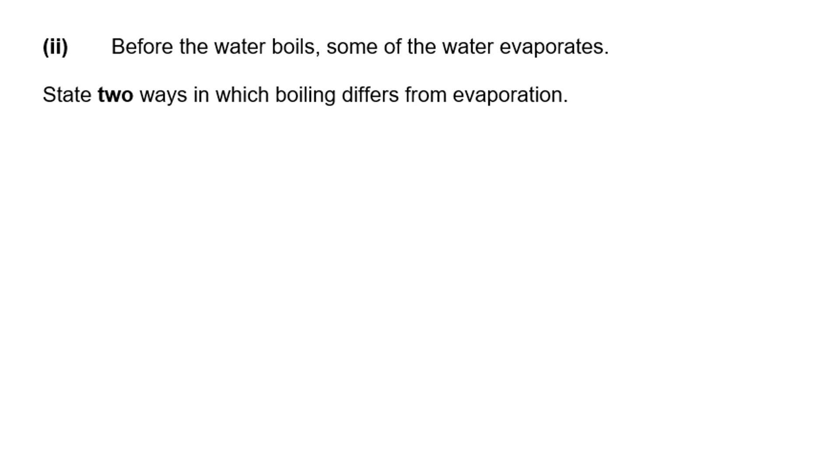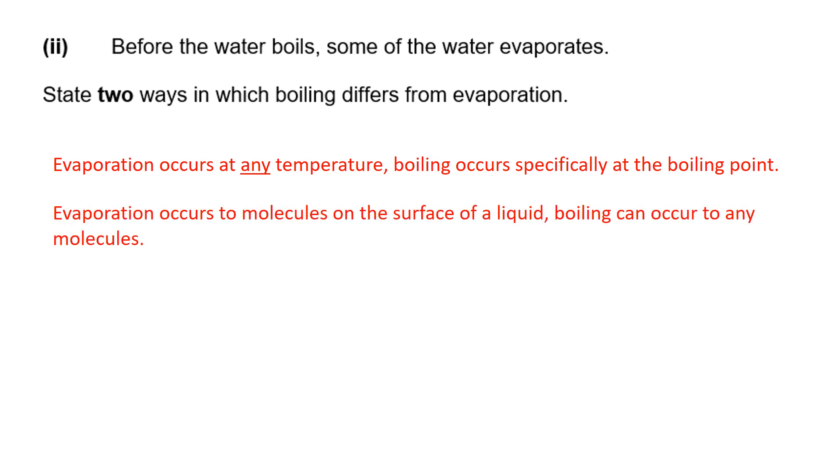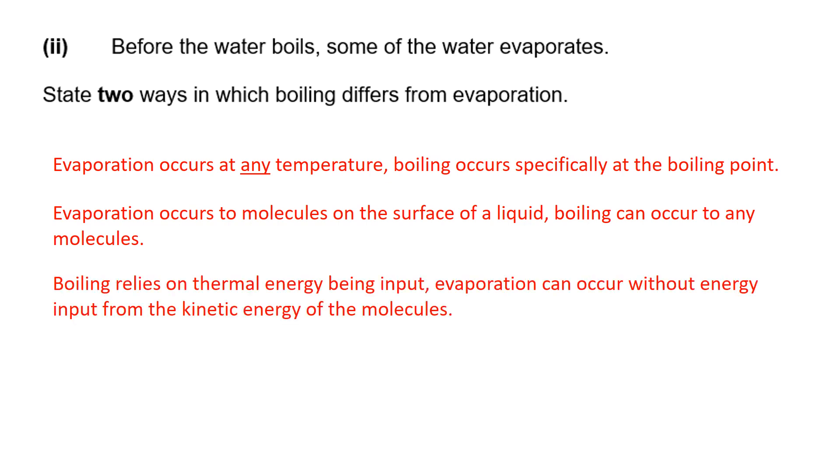Before the water boils some of the water evaporates. State two ways in which boiling differs from evaporation. Evaporation can occur at any temperature, whereas boiling occurs specifically at the boiling point—water boils at 100 degrees centigrade only. Evaporation only happens to molecules on the surface, whereas boiling can occur to any molecules in the liquid. To boil something you have to input thermal energy, evaporation uses the energy inside the liquid already. Evaporation decreases the temperature of the liquid, which is why sweating cools us down. Boiling doesn't because you've put in energy.